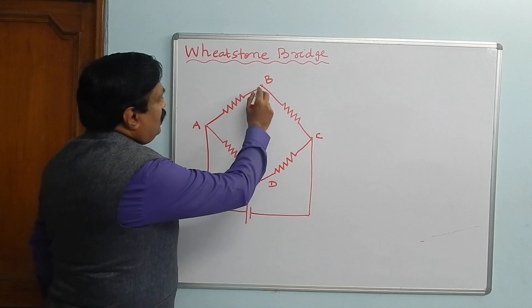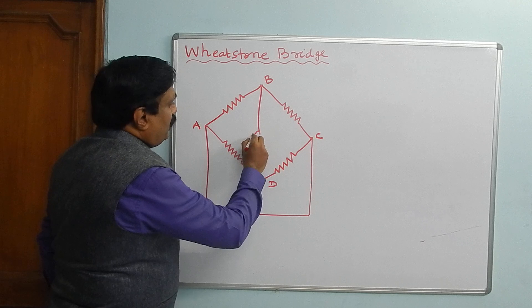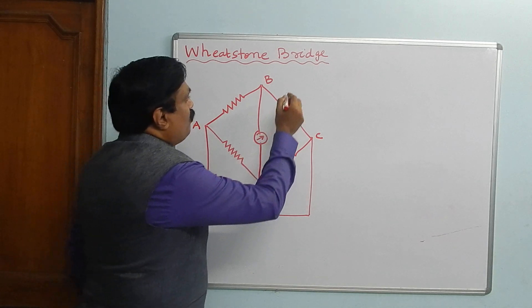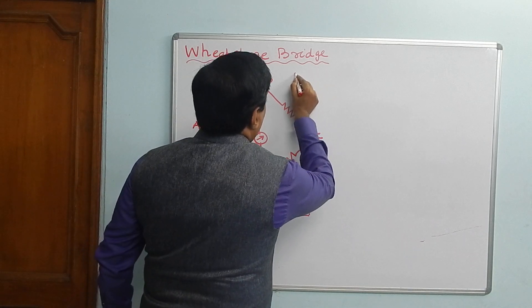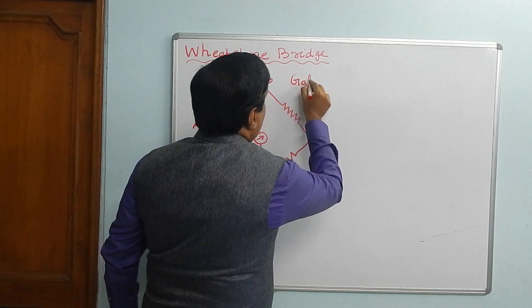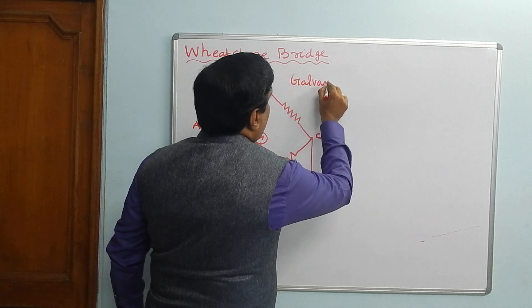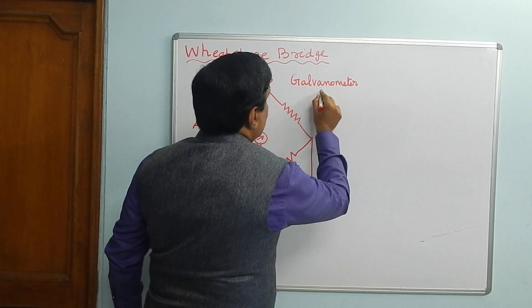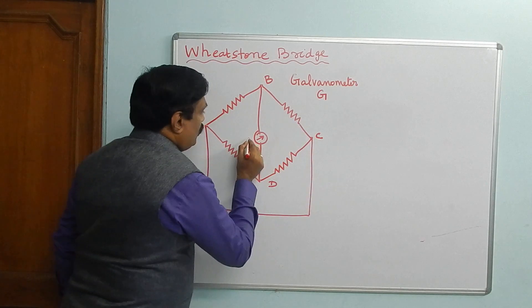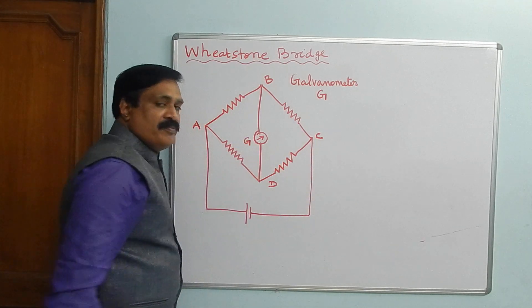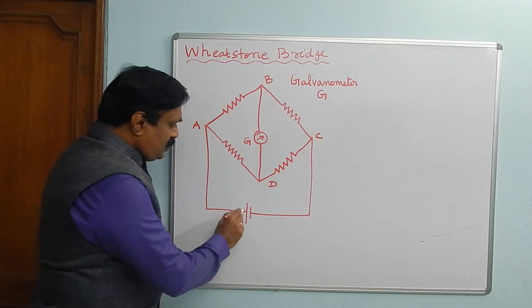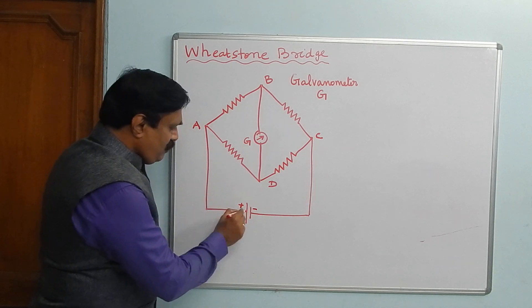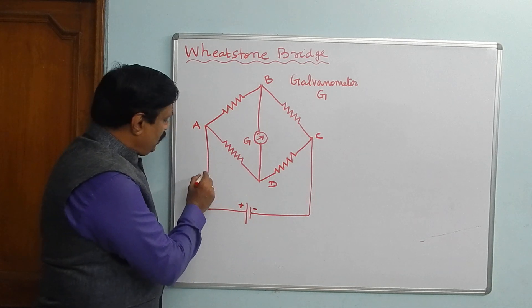Now connect one galvanometer between points B and D. This galvanometer — we call it G. In last class I told you this is the positive terminal, therefore current is coming from this positive terminal only, so mark this current as I.